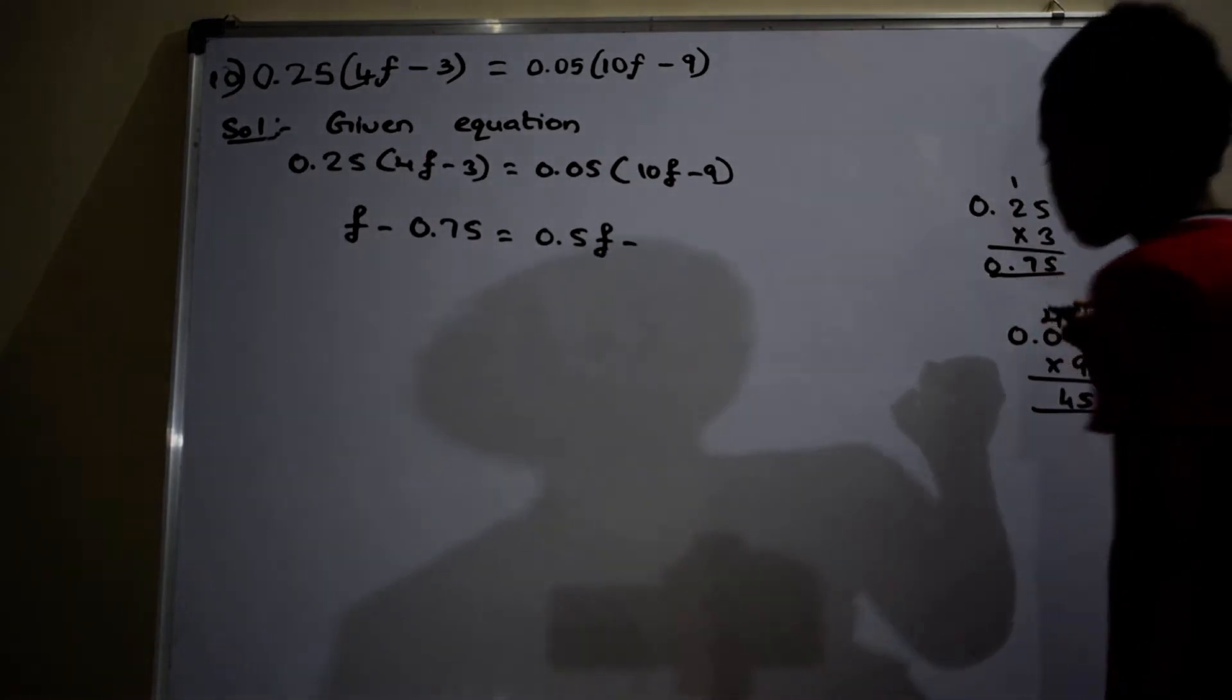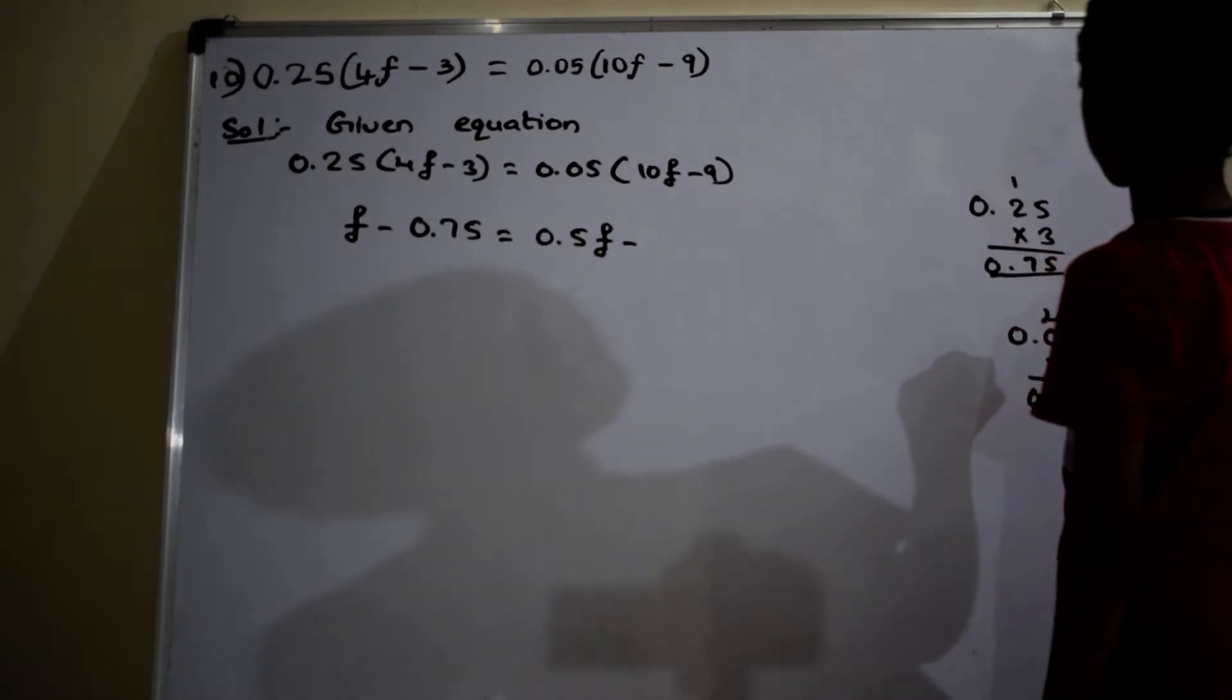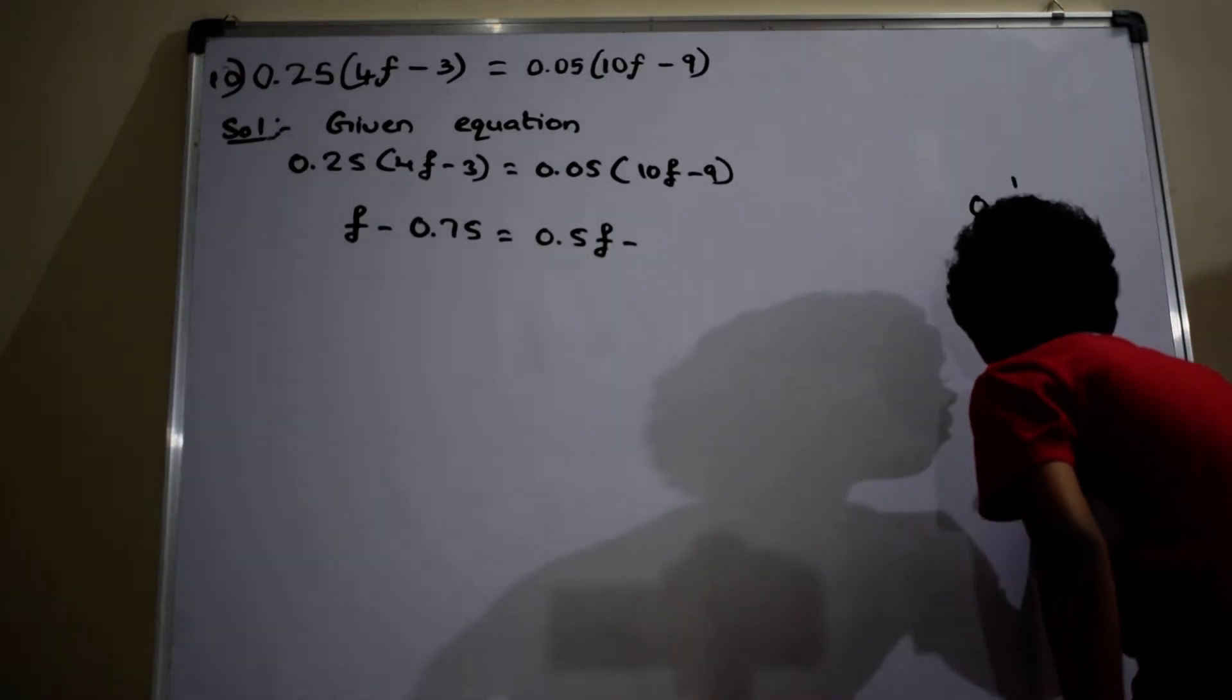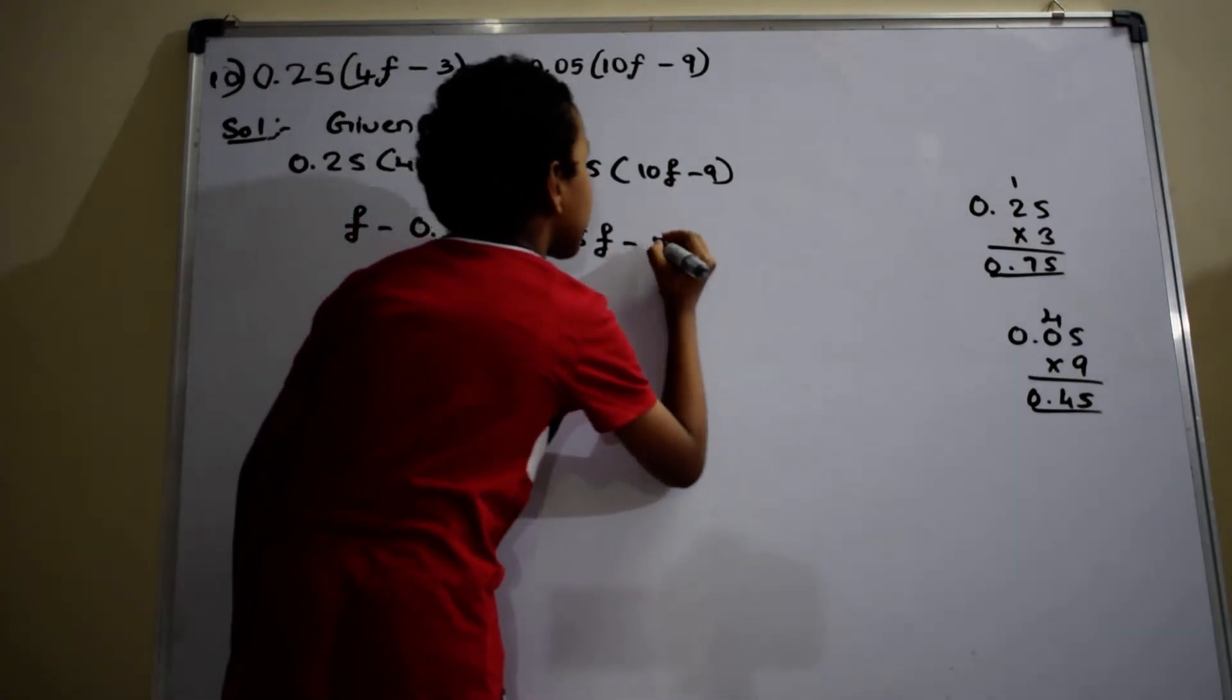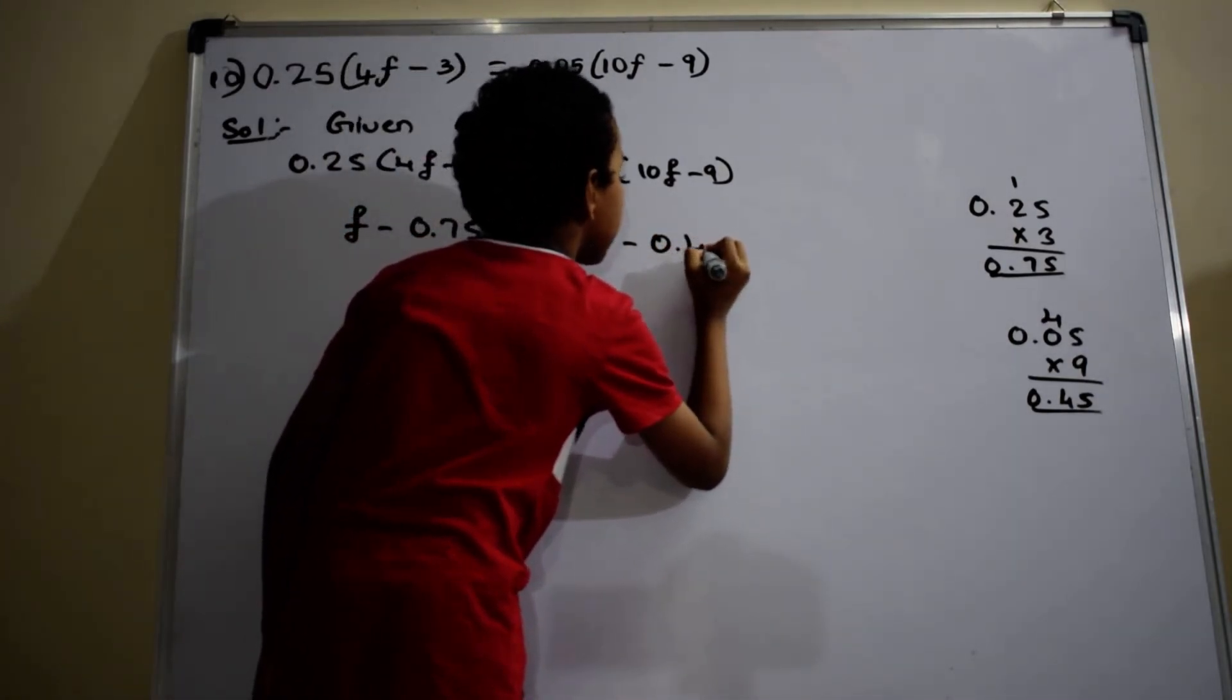9 into 0 is 0. After decimal point, there are two digits. So, put here decimal point, which is equal to 0.5f minus 0.45.